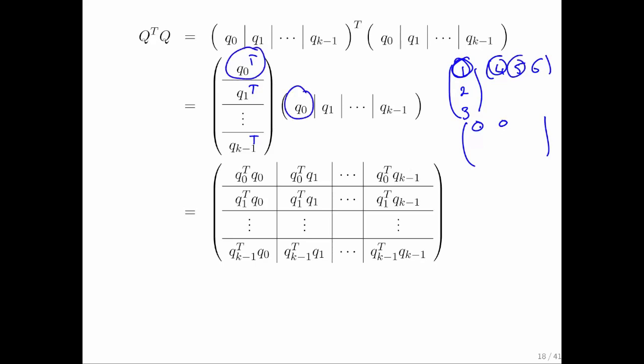I get this times this for the first entry, this times that for the second entry, etc. And what you notice is that you get the ith vector dot product with itself on the diagonal for the ith entry in this matrix.